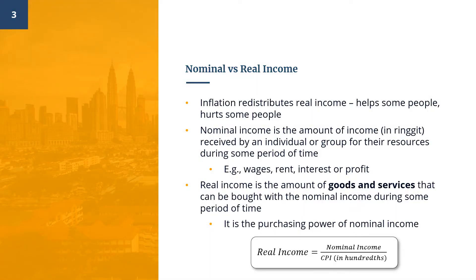Inflation redistributes real income, meaning it may help some people but may also hurt others. To understand who gets hurt, who benefits, and who is unaffected, we need to understand the difference between nominal income and real income. Nominal income is the amount of income in ringgit received by individuals or groups for their resources during a certain period — such as wages, rent, interest, or profit. Real income, on the other hand, is the amount of goods and services that can be bought with the nominal income during a certain period, or in other words, the purchasing power of nominal income. It tells us how much we can actually afford to buy.